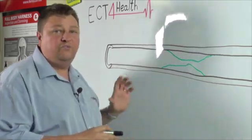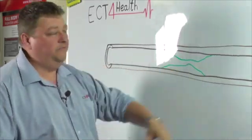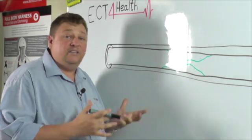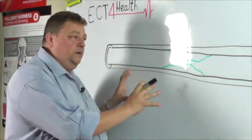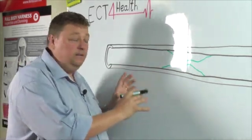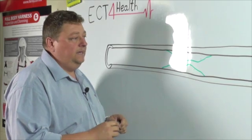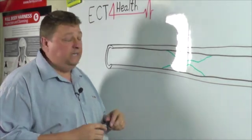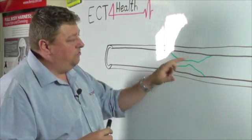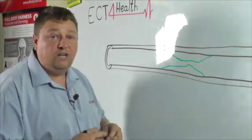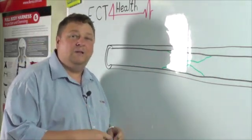On the whiteboard, already drawn, we've got essentially a cutaway of a vessel. This could be any blood vessel in the body, but particular to a myocardial infarction, what we're looking at is a coronary artery. What you can see on the inside of the coronary artery here, drawn in green, is an atherosclerotic plaque.